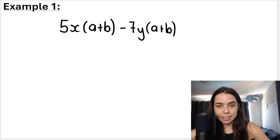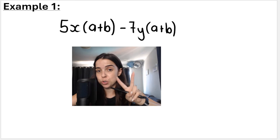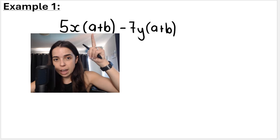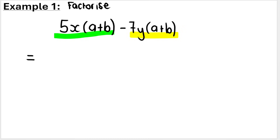Let's do a basic example first. In this expression I have two terms — terms are separated by pluses or minuses. So in this case, we can see a minus, meaning this is one term and then we've got another term. This minus separates the expression into two terms. If you ask yourself what these two terms have in common, you will see that they both have this bracket in common.